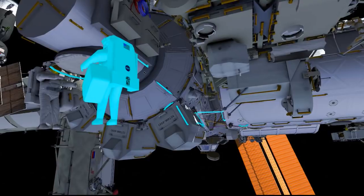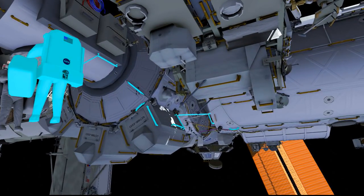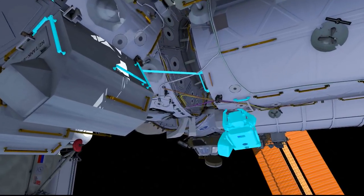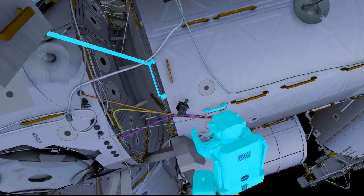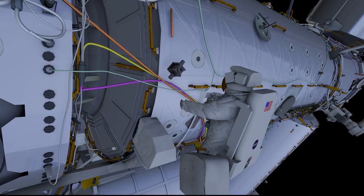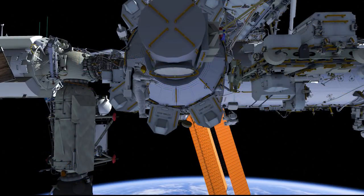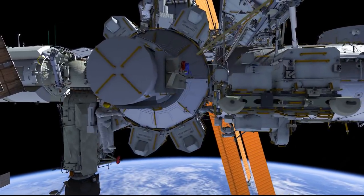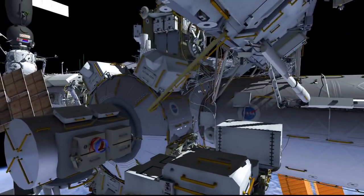EV1 will lead out of the airlock to the nadir side of the U.S. lab and temp stow the bag. EV2 will be going over the top of the lab. They will meet up at the same worksite, but they'll take different paths to de-conflict their safety tethers.